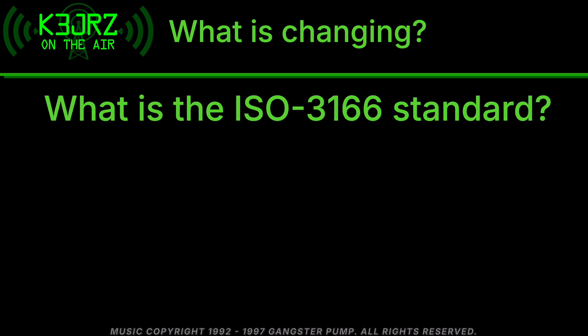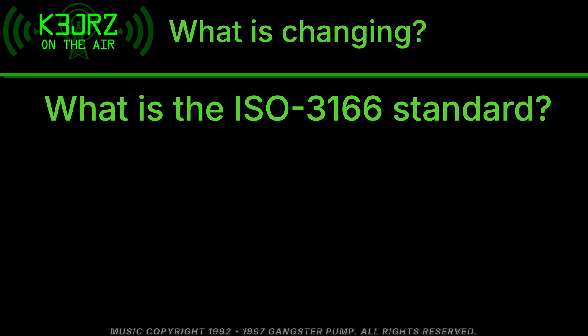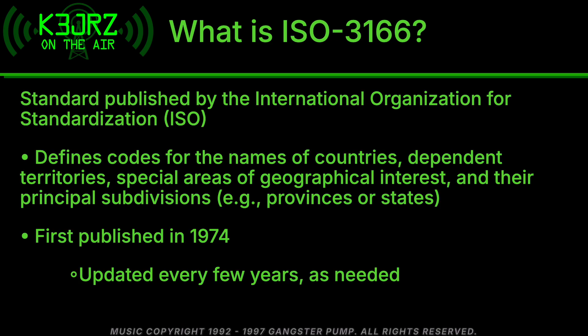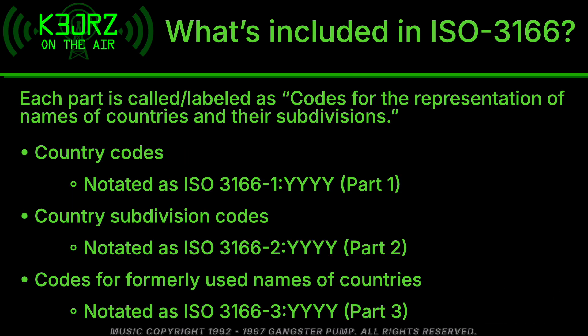And you might ask yourself, what is the ISO 3166 standard? That's a good question. The ISO 3166 is a standard published by the International Organization for Standardization. It defines the codes for the names of countries, dependent territories, special areas of geographical interest, and their principal subdivisions. It was first published in 1974 and is updated every few years as needed.